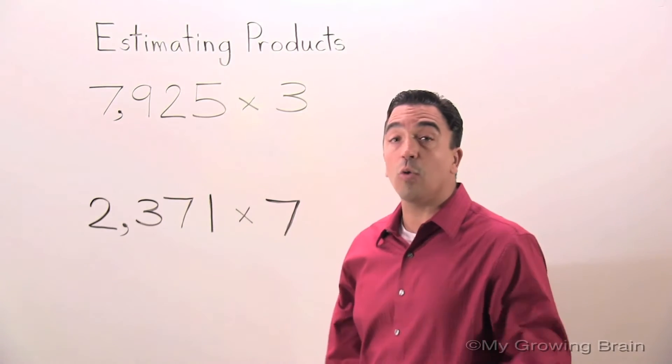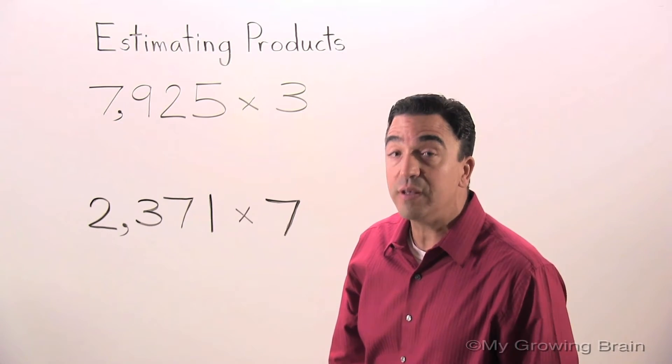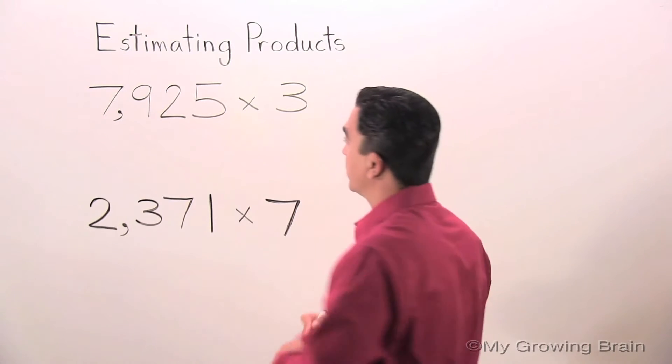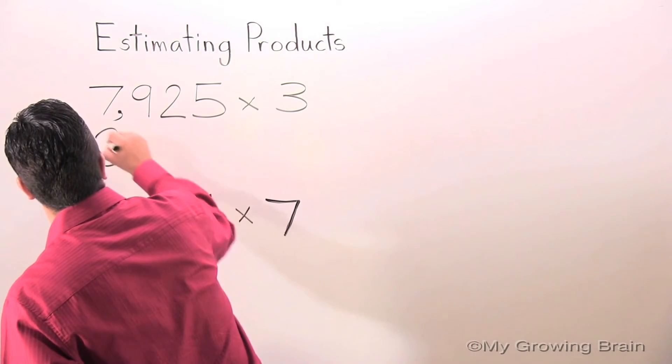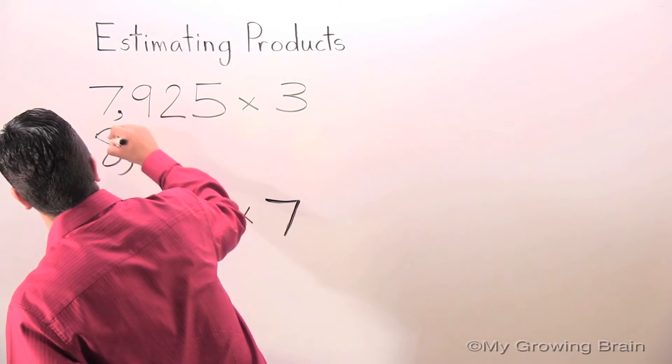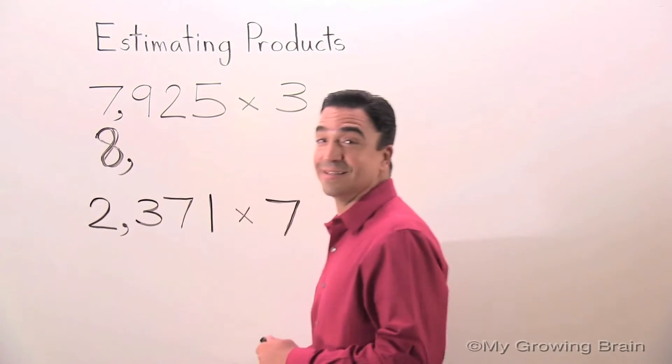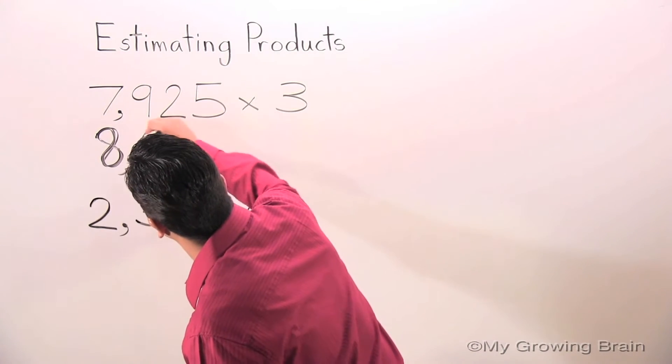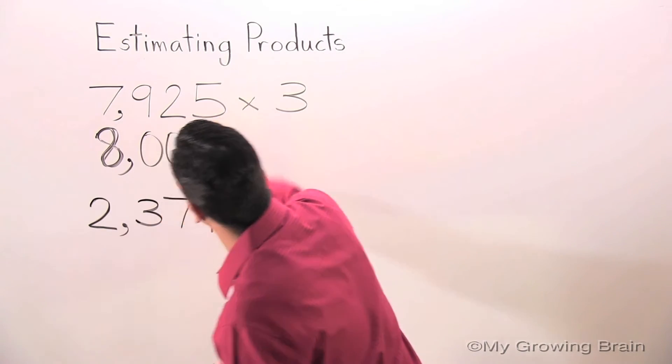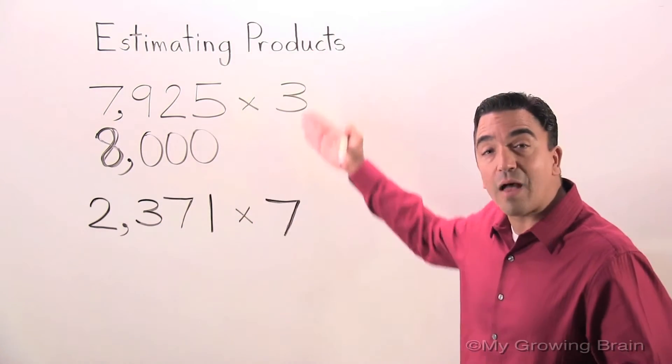7,925, round it to the nearest thousand, 8,000. Bring down the three.